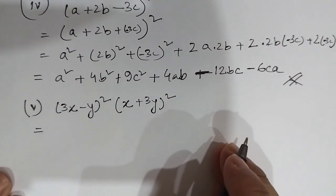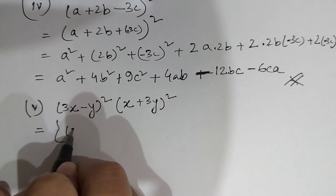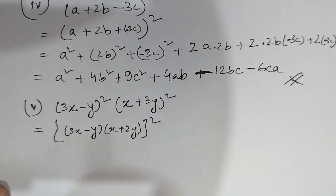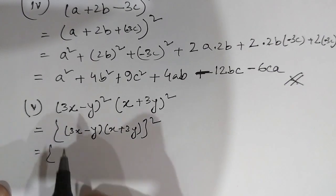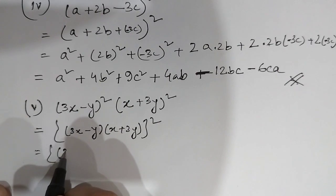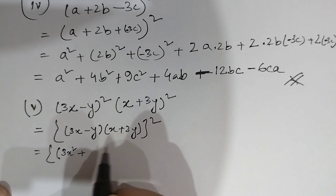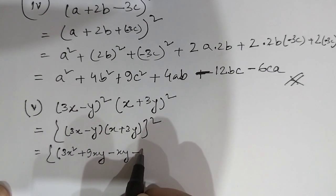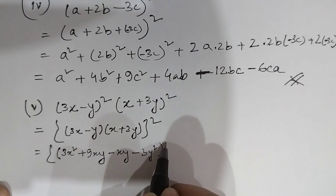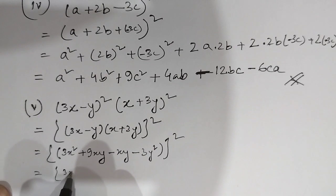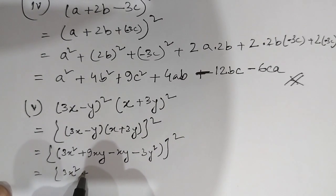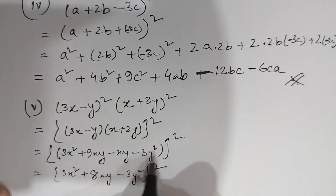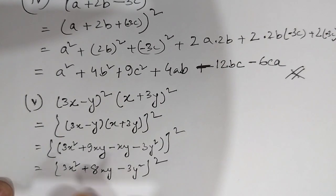This is the square. 3x minus y whole into x plus 3y whole square. Now I will expand it. 3x into x gives 3x squared plus 9xy, minus xy minus 3y squared. So we get 3x squared plus 8xy minus 3y squared whole square.